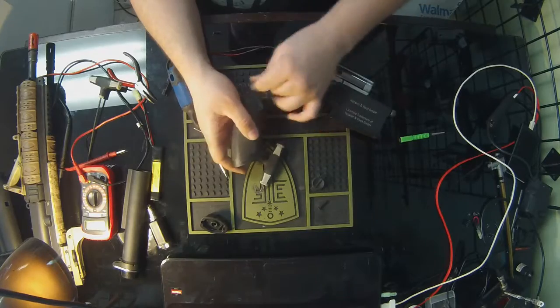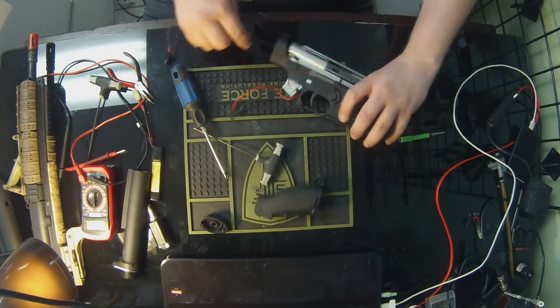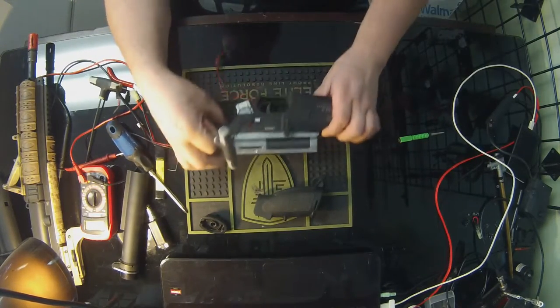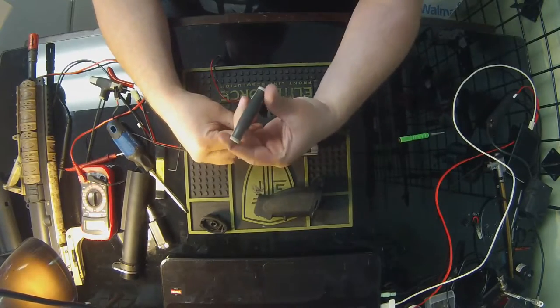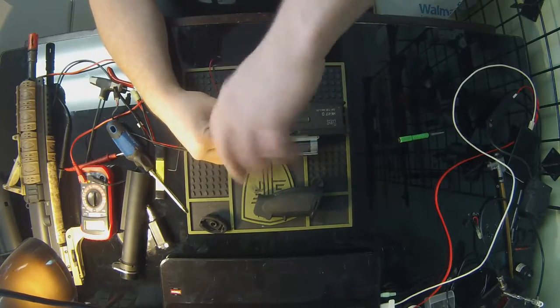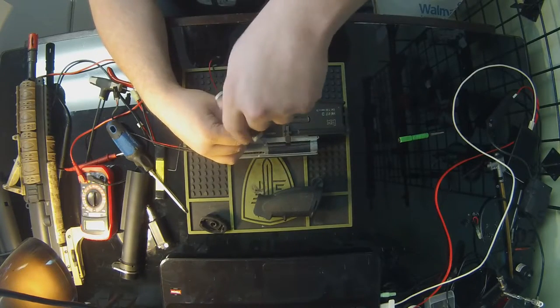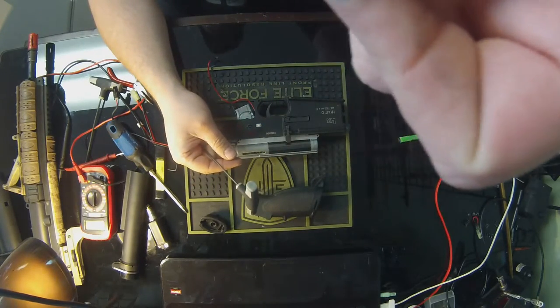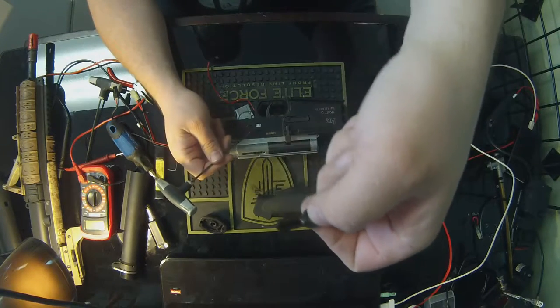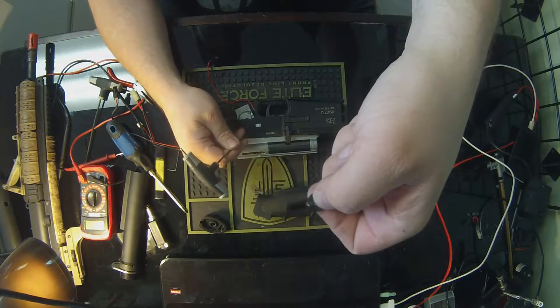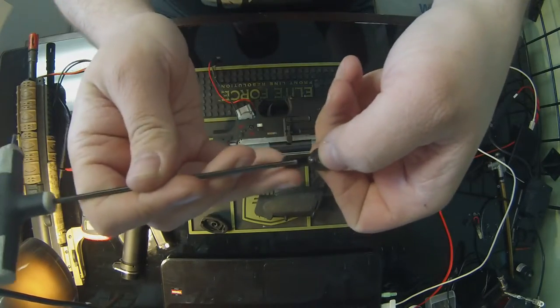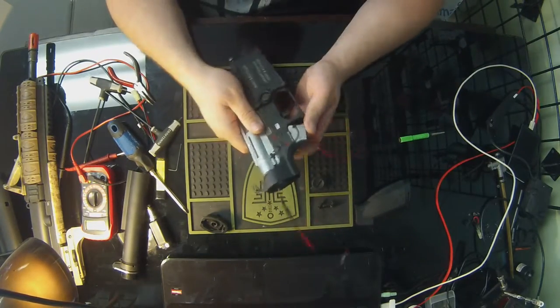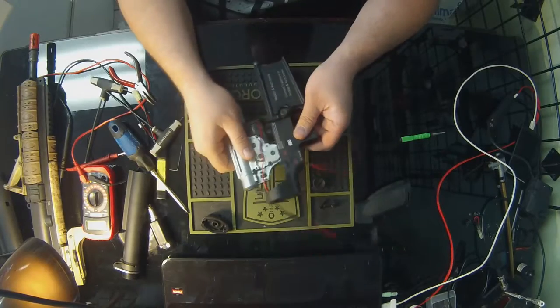This is the troublesome part on the HK417 models - you have to take the selector switch off and this is notorious for stripping out, so don't over tighten these. When you take these off, you want to make sure you don't lose the little ball detent that is on the bottom of the selector switch. This is what keeps you from safe to semi - that little ball will sit in the notches and that's what clicks into place.